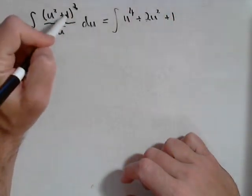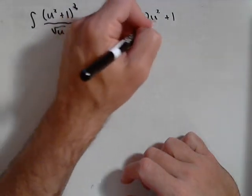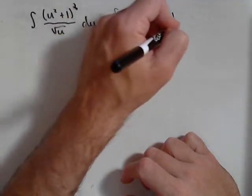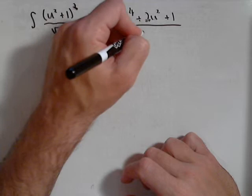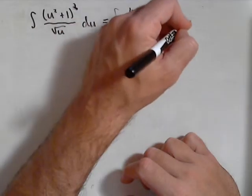Now remember, that's not u to the fourth plus one. You do have to foil it out. That's where we're getting that two u squared term. All over square root of u, du.